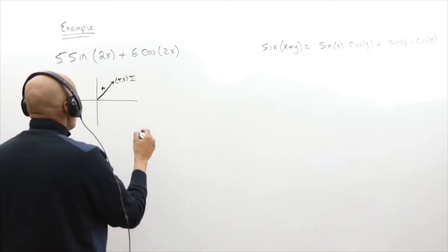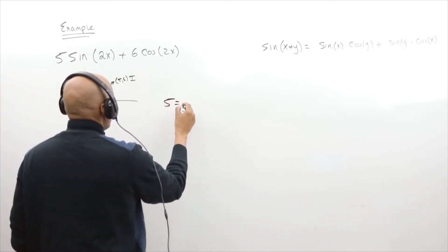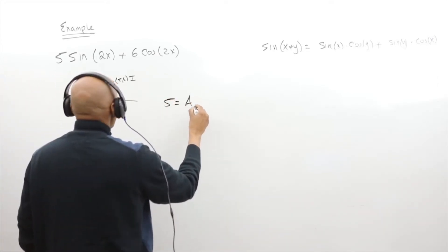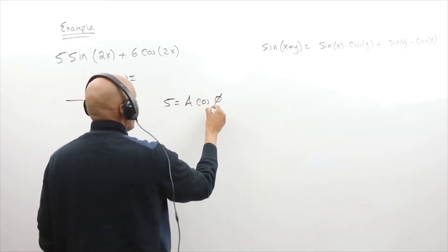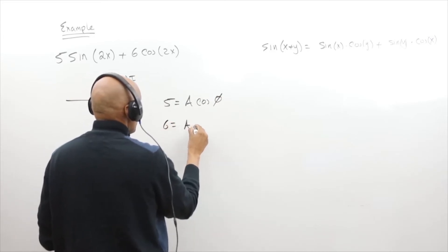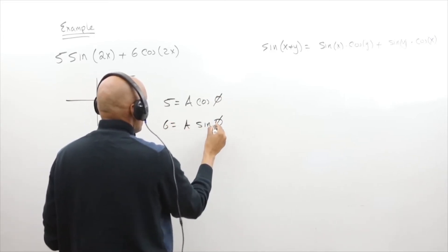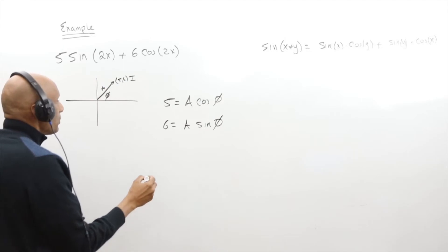So I could actually represent 5 by some kind of an amplitude times the cosine of some phase angle phi. And 6 is going to be some amplitude times sine of phi.